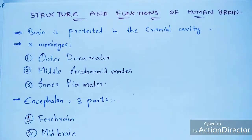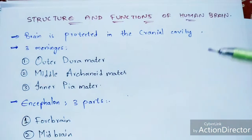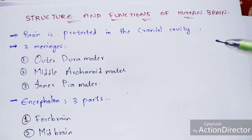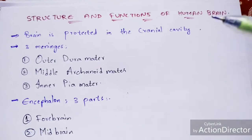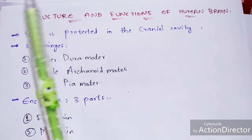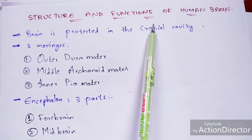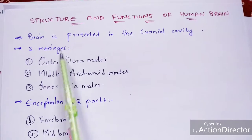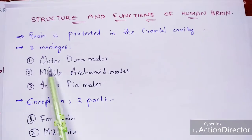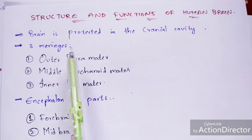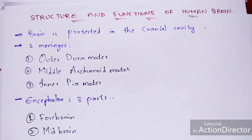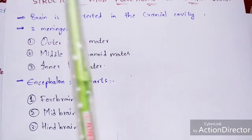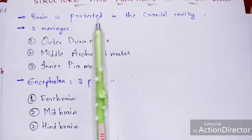The brain is a site of information processing and control — processing refers to the type of information carried out, and control refers to controlling the human body and system. The brain is protected in the cranial cavity by three cranial meninges, which are membranes: the outer dura mater, the middle arachnoid mater, and the inner pia mater.